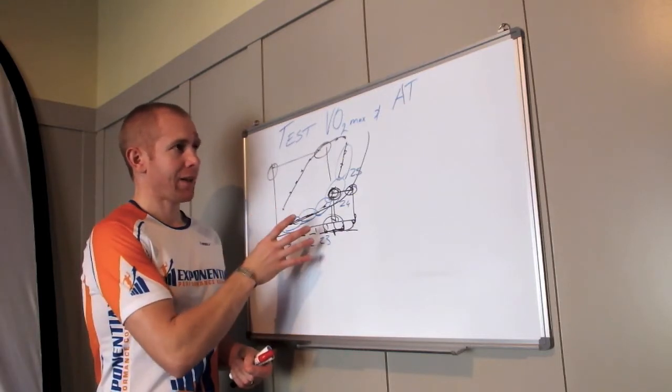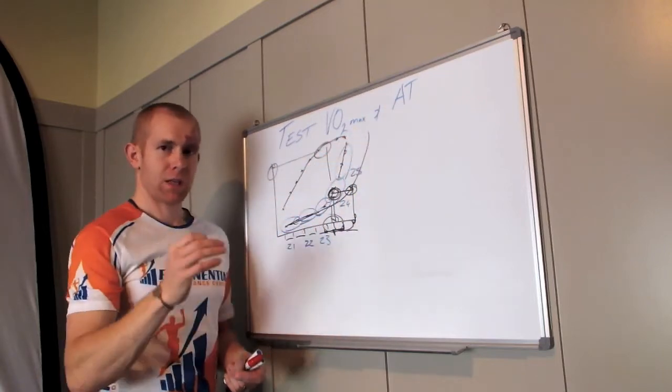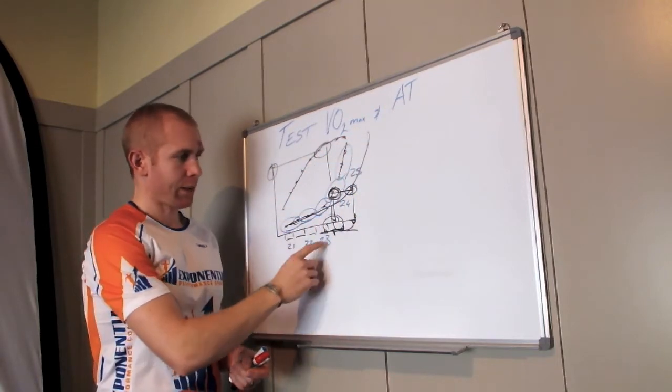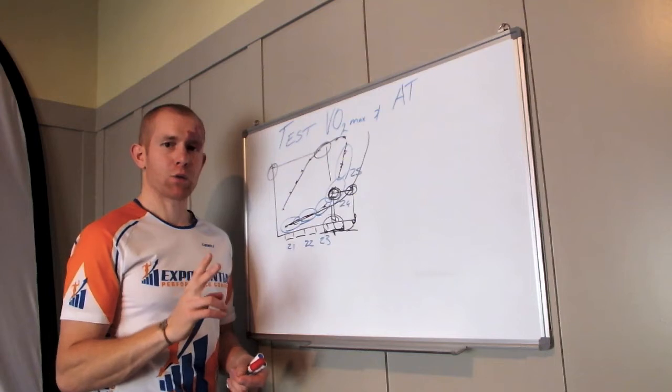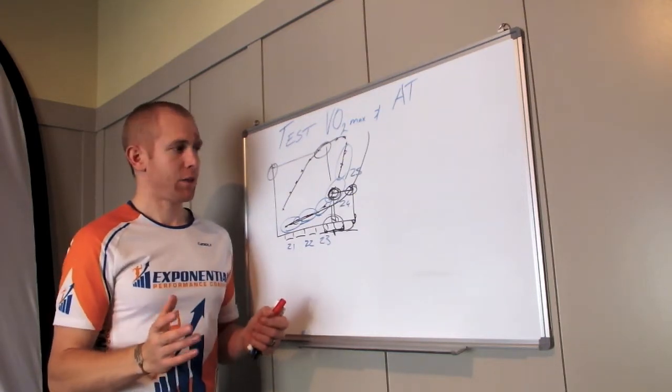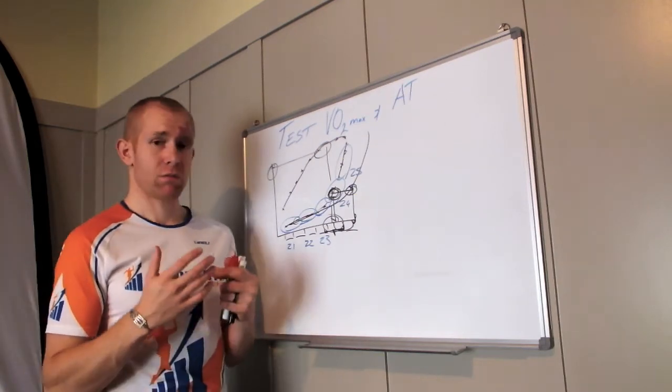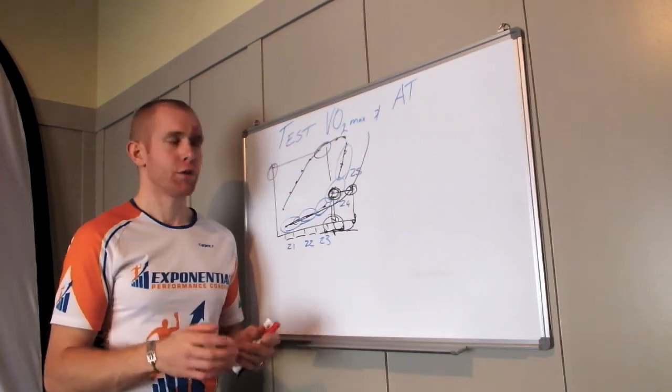The key thing is once we know what our anaerobic threshold is, use it to calculate our training zones, but also to monitor our improvements. Whatever method you use, it's really important that you go out and test it. Because if you don't test it, you don't know if it's improving.